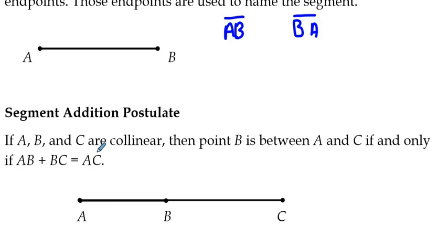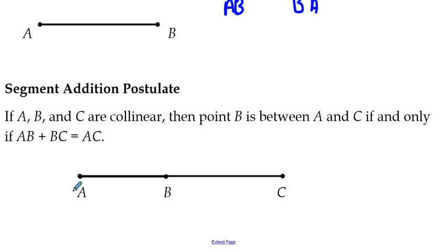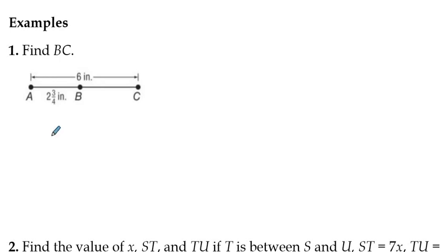I don't know how many students over the last few years that have been teaching geometry have continually messed that up even into the fourth quarter of the year. So let's talk about the segment addition postulate a little bit in terms of a few examples here. First example here, we're going to find the length of BC. So by the segment addition postulate, AB plus BC equals AC. The length of AB is 2 and 3 quarter inches. If you want to convert that to 2.75, that's okay. I'll accept that.